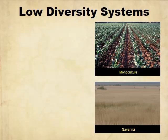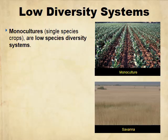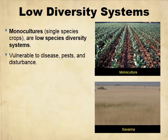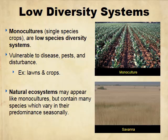Low diversity systems include things called monocultures — mono meaning one — our single-species crops. This is typical of our agricultural crops. They're very vulnerable to disease, pests, and disturbance. If you have a monoculture of corn and it gets the corn beetle, the beetle eats everything — it's a huge buffet. In nature, we have things like the savanna, which seems like a monoculture but is actually pretty diverse.